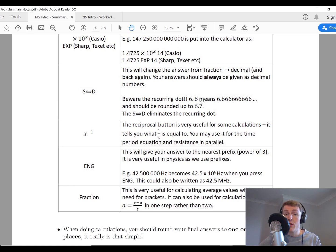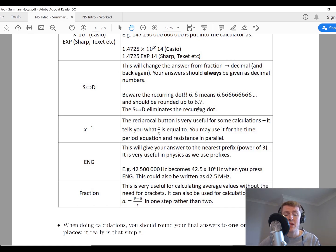Another thing to be aware of is the recurring button. This is because we don't use recurring symbols in physics. We always want to round our answers to one or two decimal places. So for example, if you had an answer 6.6 dot 6.6 recurring on your calculator, you would round this up to 6.67.